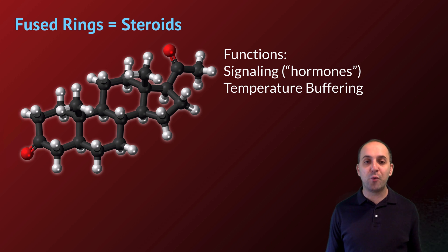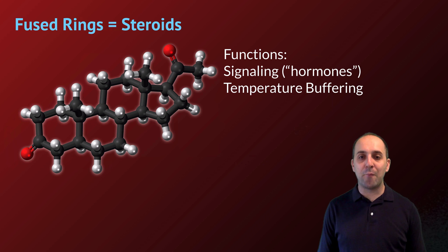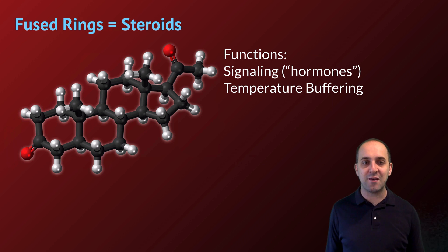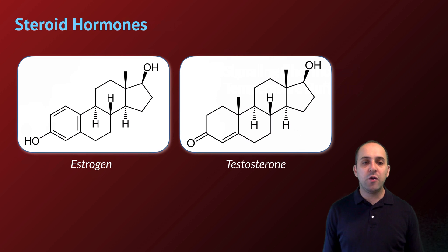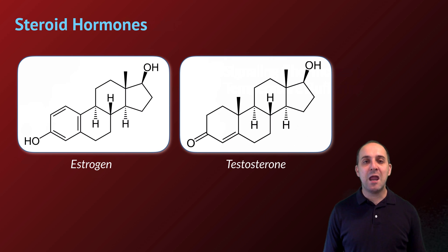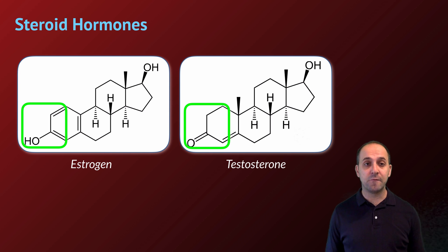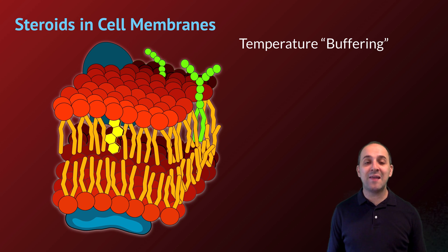The last group of lipids is the steroids, recognizable by their multiple fused rings. Steroids play an important role in cell signaling and serve as one important group of hormone molecules — chemical messages sent from one cell to another. The hormones estrogen and testosterone, which determine mammalian secondary sexual characteristics, are two steroid hormones. Notice these two molecules are almost identical — only a small structural difference — yet that small difference sends a completely different message to cells.